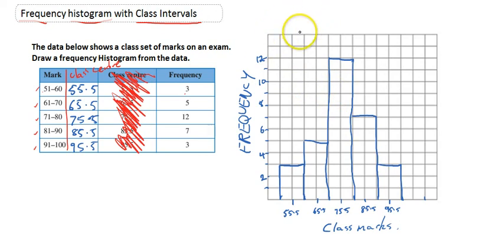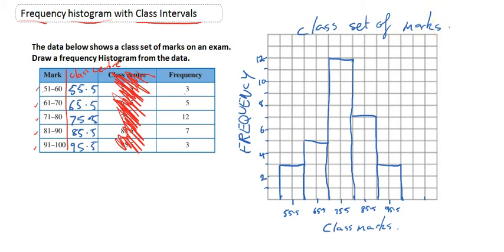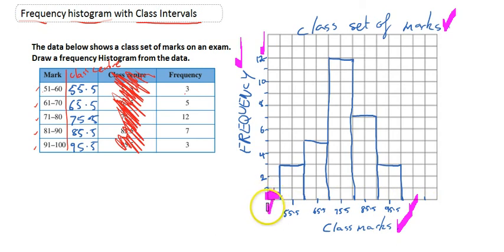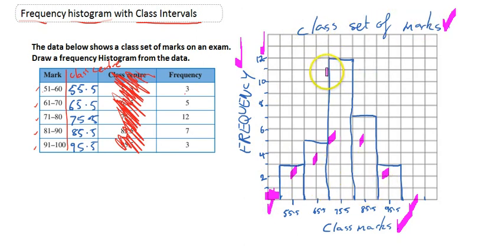Don't forget to title your graph as well — something like 'Class Set of Marks.' When this is marked, we're going to be checking your title, all of your axis labels to make sure those numbers are in the right spots, that half-space gap, and of course the columns — making sure they're all correct. Drawing a column graph is not a difficult thing to do, but we do make small key mistakes like forgetting the space, forgetting our titles, or accidentally putting a column in the wrong spot. So just be wary of it.